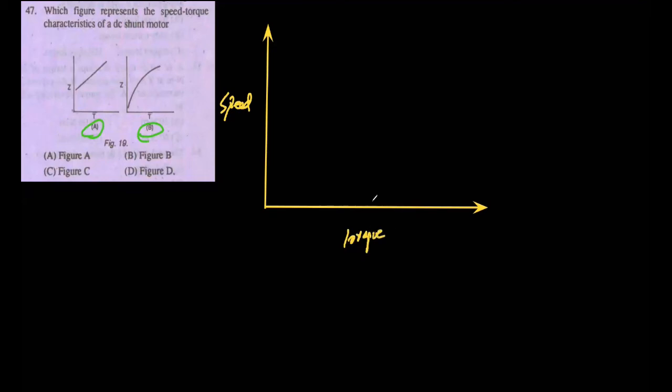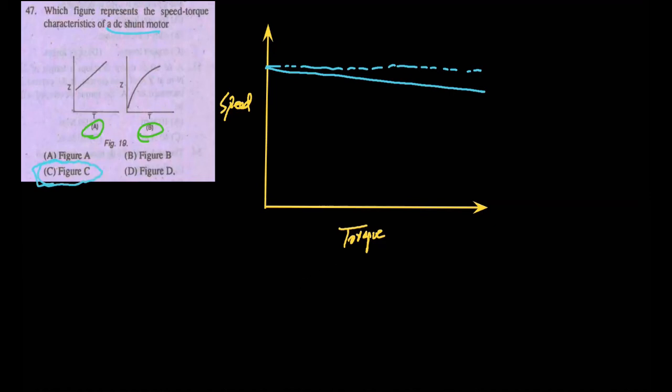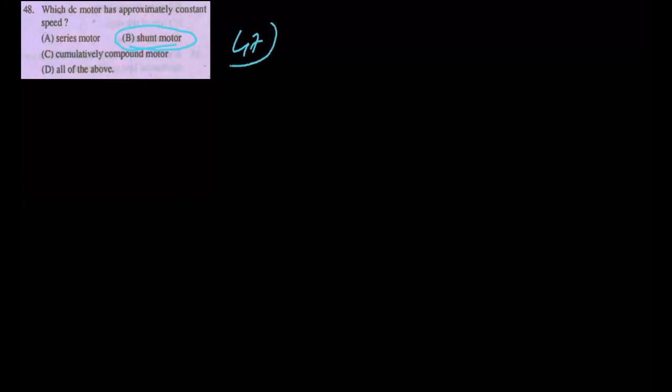The next MCQ asks which figure represents the speed-torque characteristic for a DC shunt motor. The curve is: if you increase the torque, the speed decreases slightly from a nearly constant value — it is a slightly drooping line. Option C is the correct answer according to the book. The following MCQ asks which DC motor has approximately constant speed — the answer is the shunt motor, as already discussed.